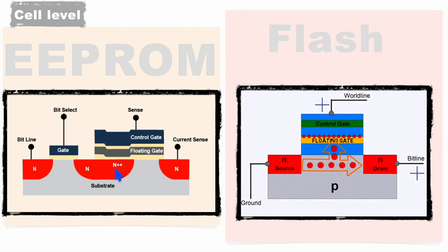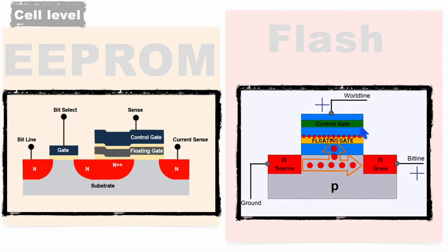On this control gate you can see there is a floating gate where electrons will be migrating from the N++ region during the programming operation. When the substrate is grounded and we apply a higher voltage on this gate, the electrons present in the N++ region migrate to this floating gate. In flash memory, we have only one control gate.